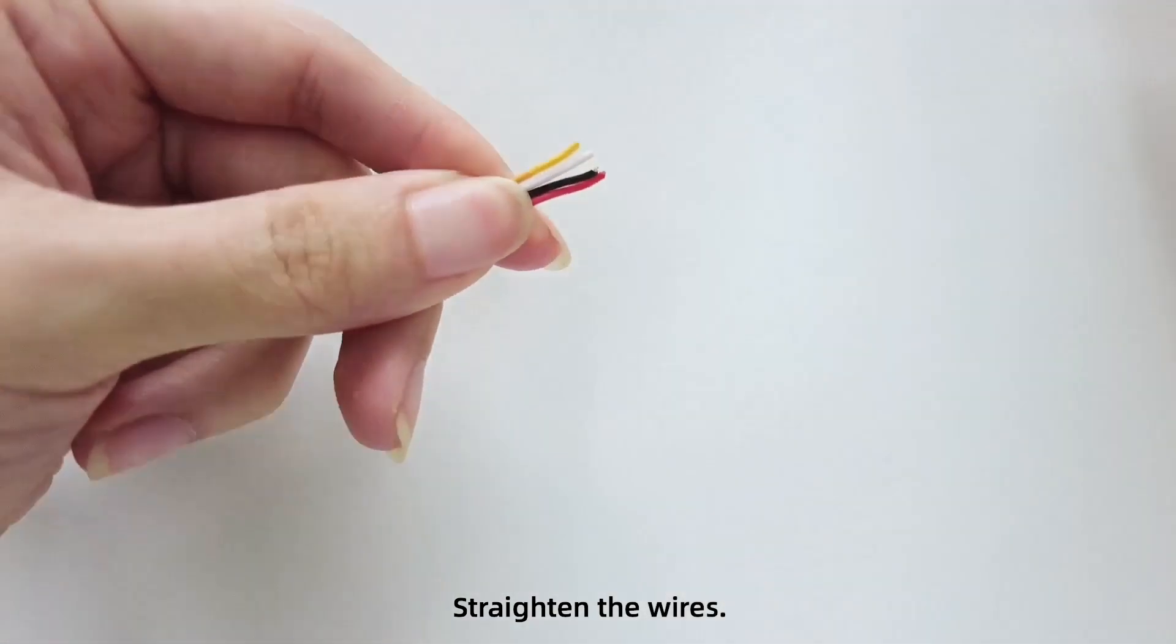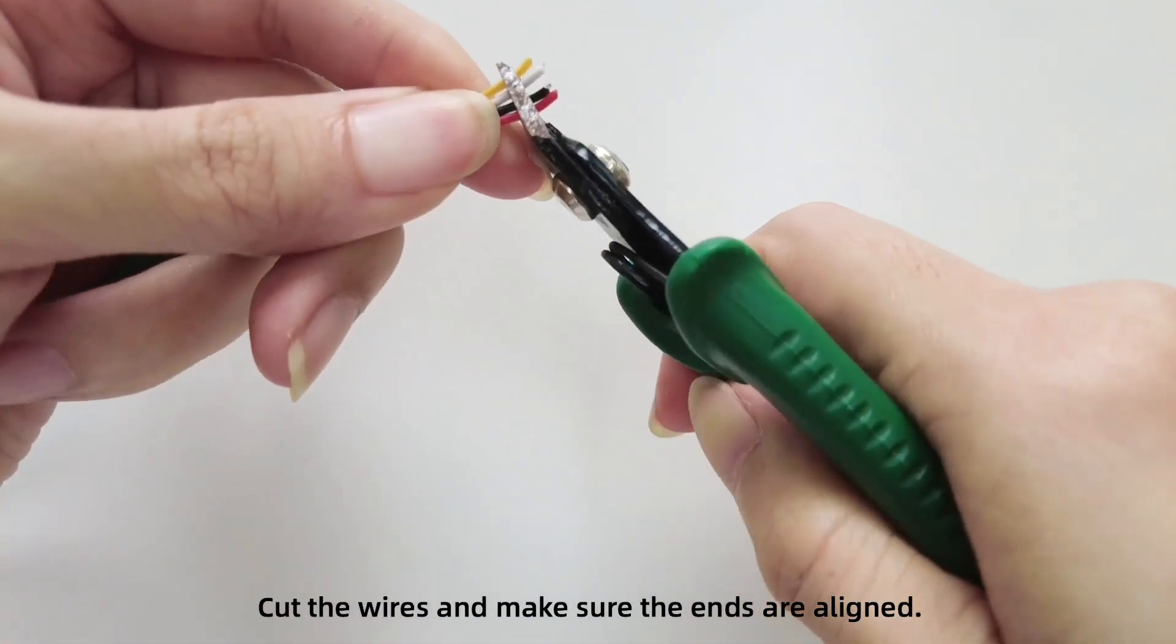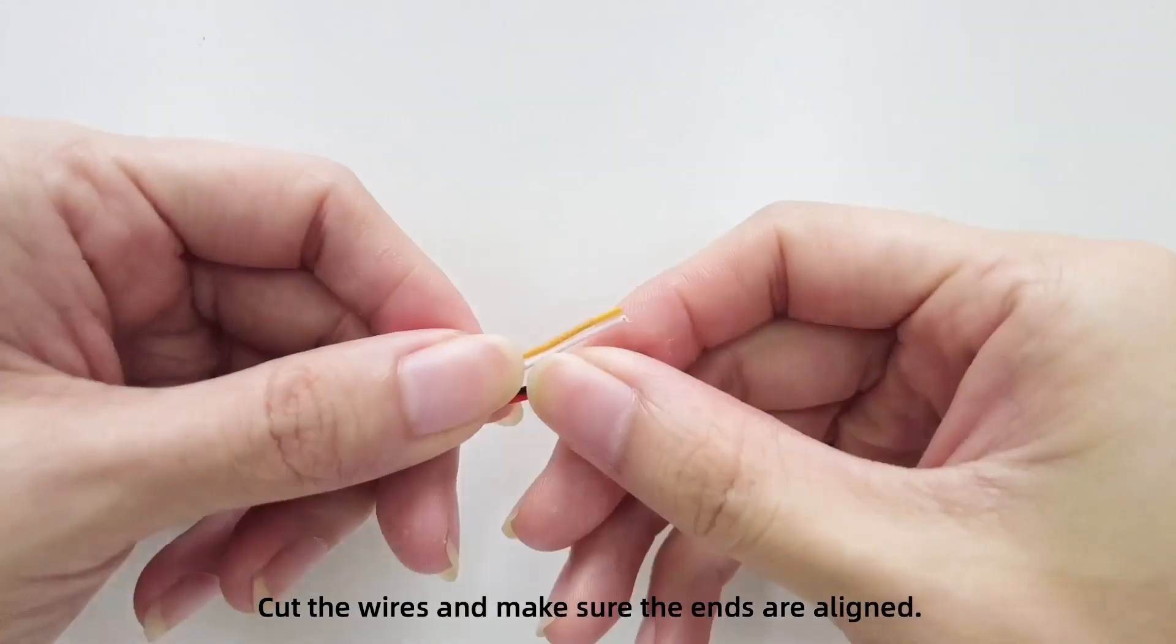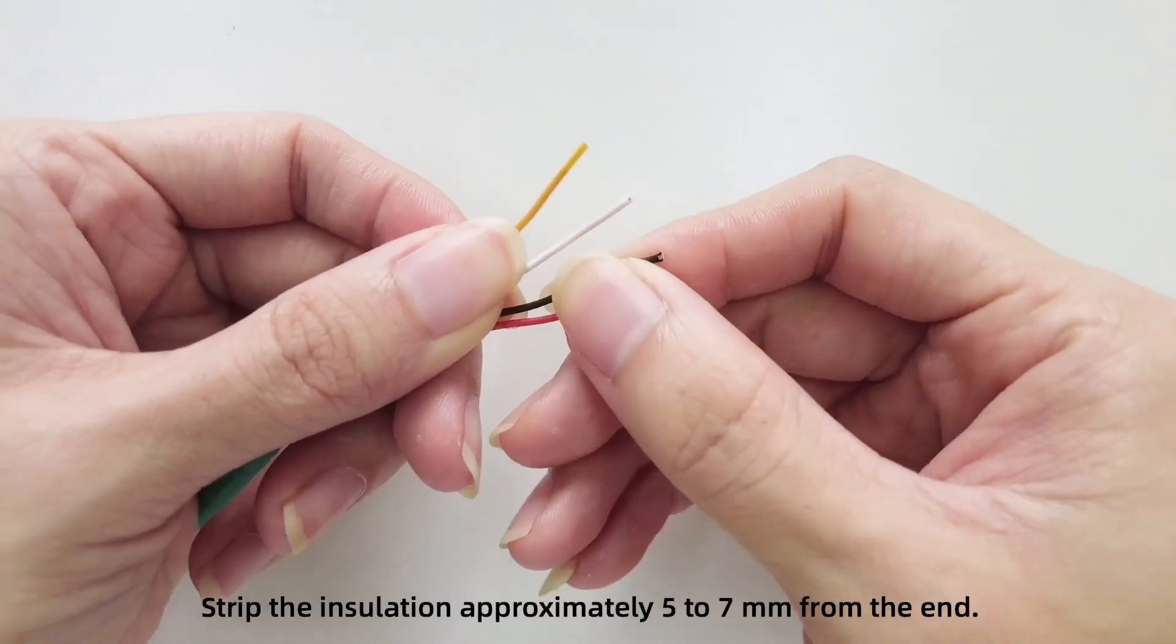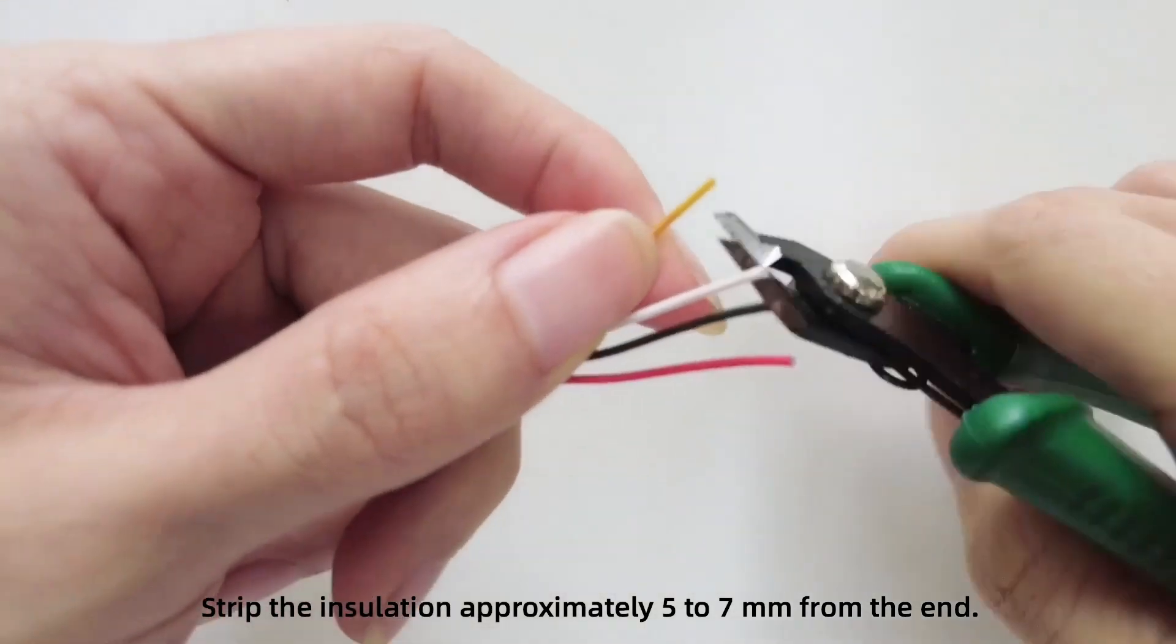Straighten the wires. Cut the wires and make sure the ends are aligned. Strip the insulation approximately 5 to 7 mm from the end.